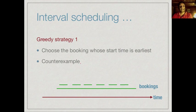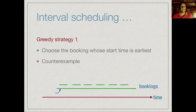One strategy might be to choose the booking whose start time is earliest. But it's not difficult to find a counter-example. If there is one long green booking which starts earliest and ends after all other bookings, this greedy strategy would allocate the entire period to just one teacher. Whereas if we chose a booking starting slightly later, we could satisfy six teachers. Since our goal is to maximize the number of teachers, this greedy strategy is clearly flawed.